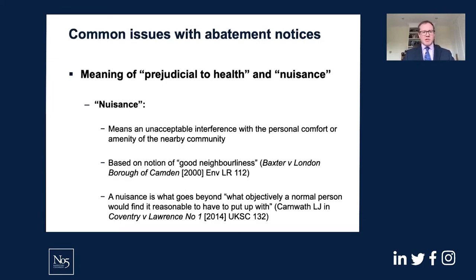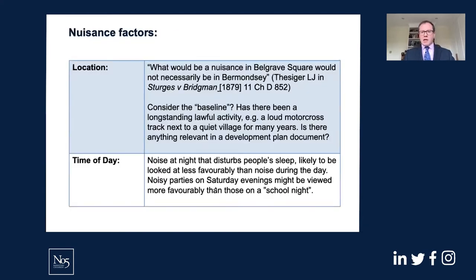The second limb is 'nuisance,' which means an unacceptable interference with the personal comfort or amenity of the nearby community. It's based on the idea of good neighbourliness, as set out in Baxter v London Borough of Camden, and defined by Lord Justice Carnwath in Coventry v Lawrence (No. 1) as meaning what objectively a normal person would find reasonable to have to put up with. In making a judgment, an authority will want to take into account several factors, the first of which is location.